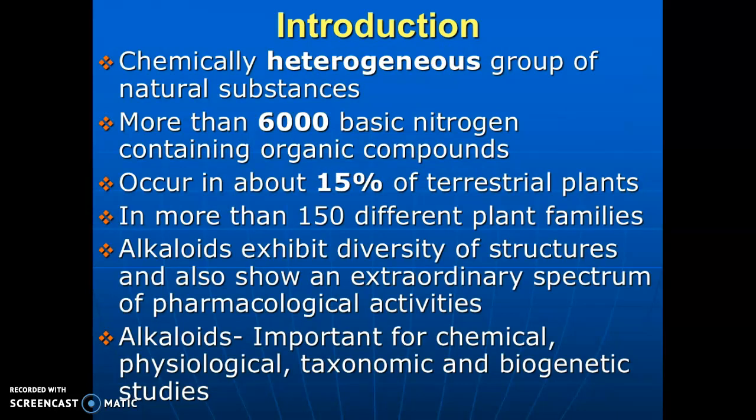The chemically heterogeneous group of natural substances known as alkaloids includes more than 6,000 basic nitrogenous-containing organic compounds. These occur in about 15% of the terrestrial plants on the earth, and in more than 150 different plant families. Alkaloids exhibit diversity of structure and also show an extraordinary spectrum of pharmacological activities.